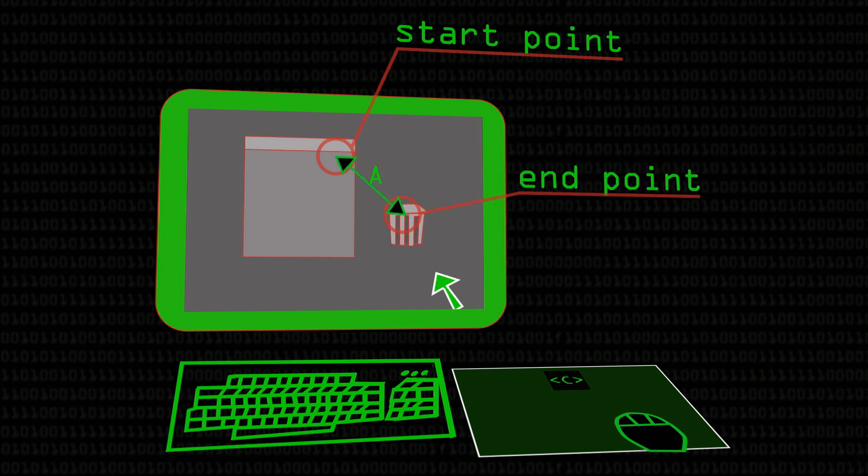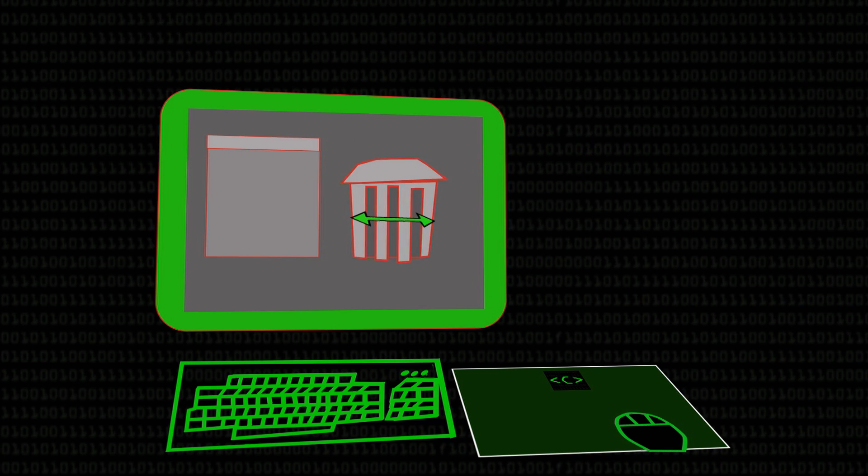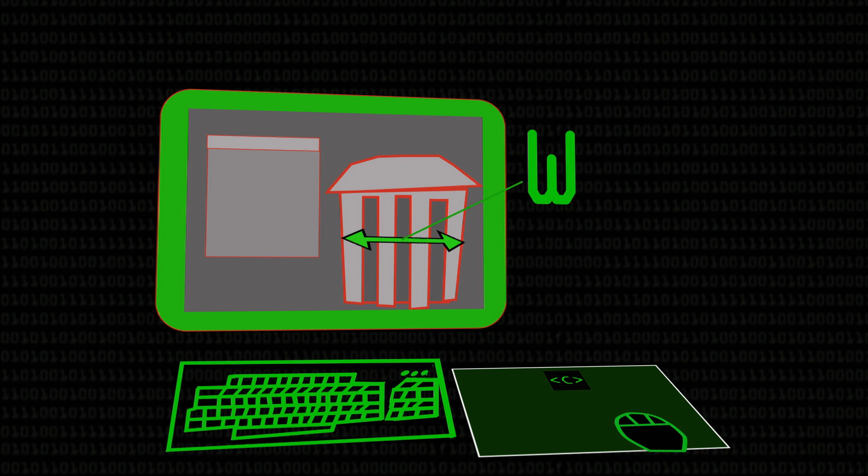The wider something is, the less accurate you need to be. The way we use this formula is that we want to minimize the amount of time someone takes, and to do that we can do two things as designers: firstly, we can make the amplitude small, which means making the target closer; or we can make W, the width, large — so we can make the target massive. This seems pretty obvious, doesn't it?